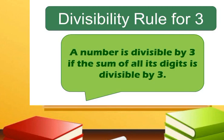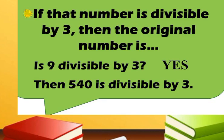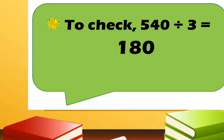Divisibility Rule for 3: A number is divisible by 3 if the sum of all its digits is divisible by 3. For example, take the number 540. Add up the digits: 5 plus 4 plus 0 equals 9. If that sum is divisible by 3, then the original number is. Is 9 divisible by 3? The answer is yes. Then 540 is divisible by 3. To check: 540 divided by 3 equals 180.